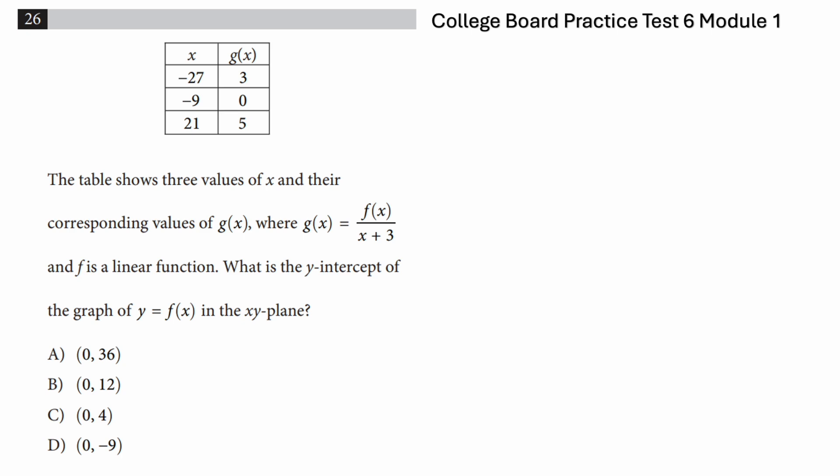So we are interested in the y-intercept of the graph of y = f(x). Now let's start from what is given. Given is g(x) = f(x)/(x + 3), so we can write f(x) as g(x) times (x + 3). And the second clue is f is a linear function, so that means f(x) can be written as y = mx + b.